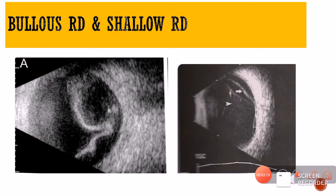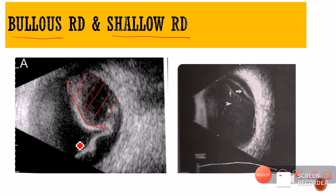Based on the configuration of fluid in the sub-retinal space, RD can be two types: bullous RD or shallow RD. This tells you how urgently surgery should be performed and how much fluid is present, since more fluid causes more damage to photoreceptors. The first image shows a bullous RD — bullous is nothing but a dome-shaped structure. The second image shows a flatter RD with less fluid — this is a shallow RD.